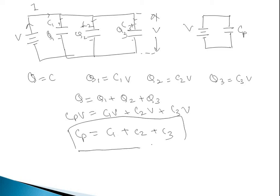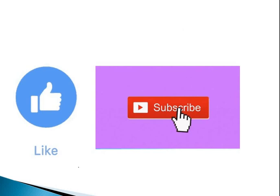If there are n number of capacitors, then Cp = C1 + C2 + C3 + ... up to n. The potential difference across each capacitor in a parallel combination is the same, equal to V volts. The total charge on the parallel combination equals the sum of the charge on each individual capacitor: Q1 + Q2 + Q3. This is the equation for capacitor in parallel and capacitor in series. Hope you understood. Please like, share, and subscribe to my channel. Thank you for watching.